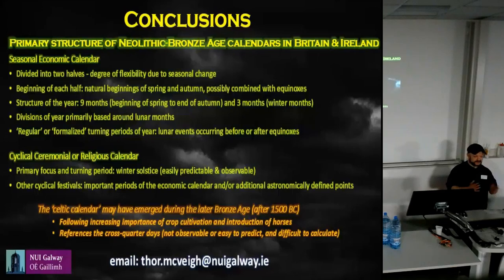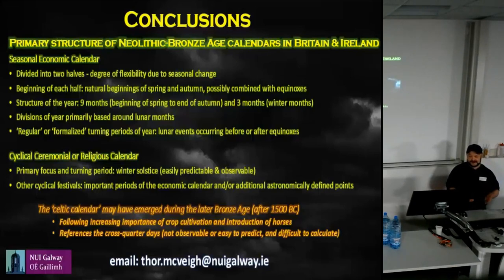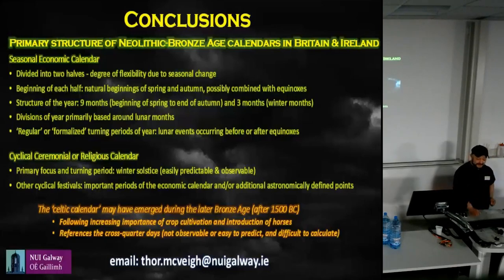To conclude: a seasonal economic calendar divided into two halves, with flexibility, probably structured around spring and autumn, with a nine-month/three-month division and formal turning points occurring with lunar months around the equinoxes. The cyclical ceremonial and religious calendar has its primary turning point at the winter solstice, with other festivals as parts of the economic year. The Celtic calendar may have emerged during the later Bronze Age following the increased importance of crop cultivation and the introduction of horses. Quarter days are not easily observable or predictable — even those Neolithic monuments near those periods are probably tracking seasonal change rather than the exact dates.